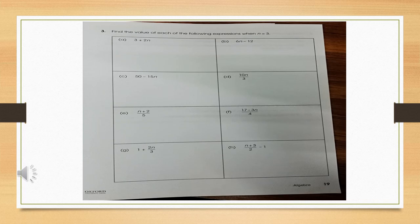This is page number 19 of the workbook. Here is a question in which you have to find out the value of the following expressions when n is equal to 3. This means you have to put the value of n in each question and find out the answer. You also have to solve this in your workbook.